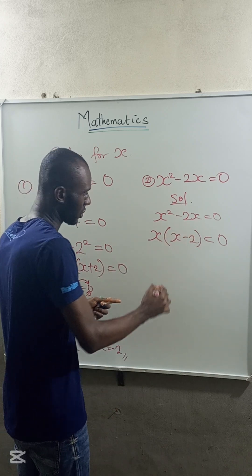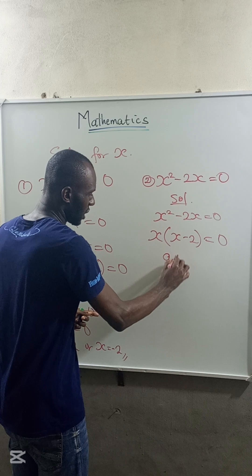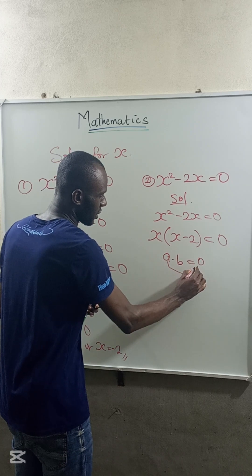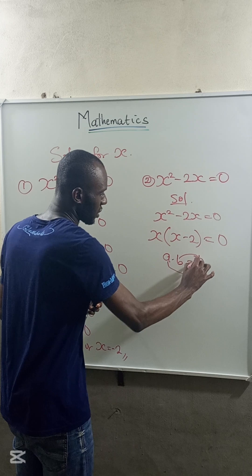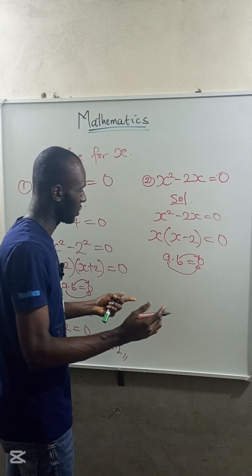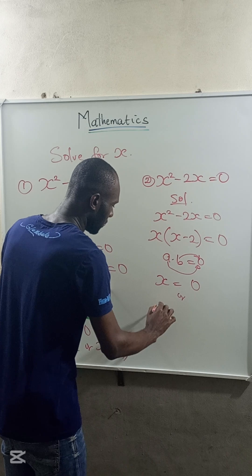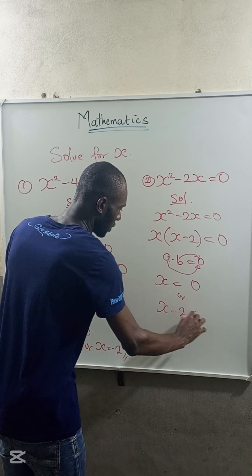So at this point, recall also that if a multiplied by b is equal to 0, it's either that a is equal to 0 or b is equal to 0. So therefore, x is equal to 0 or x minus 2 is equal to 0.